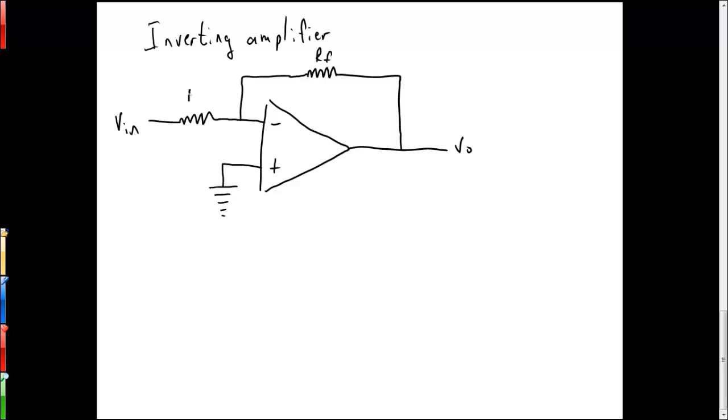We'll call this resistor RI. Of course, we also have a positive input source and a negative input source.